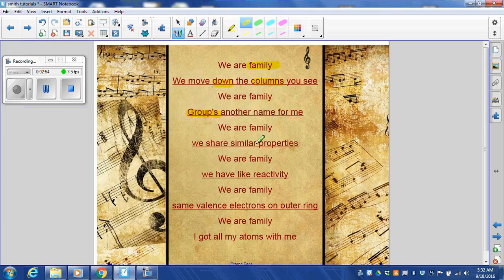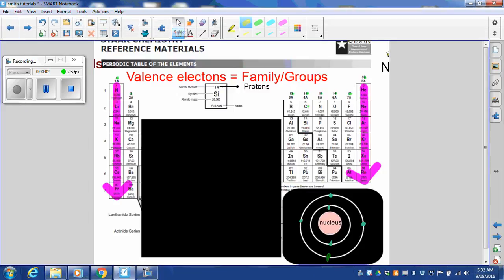Next, all the elements with the same number of valence electrons share similar properties. All the family groups on the periodic table have names. Family group 1 is named the alkaline metals. They all share similar properties.